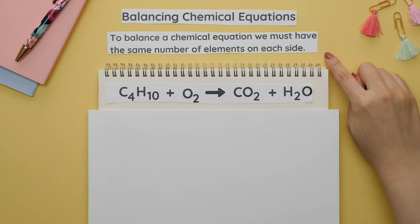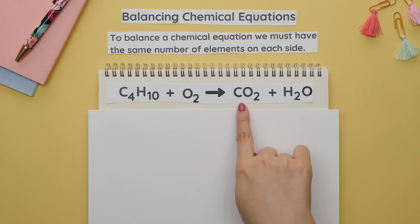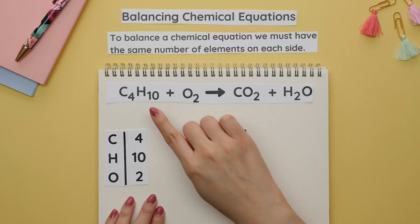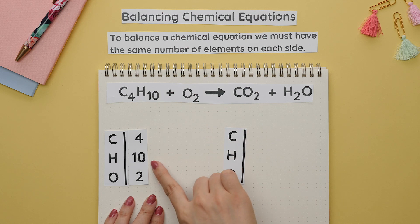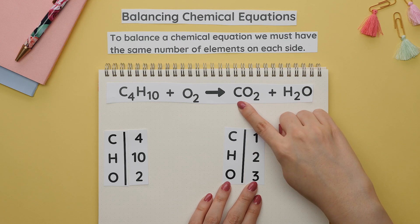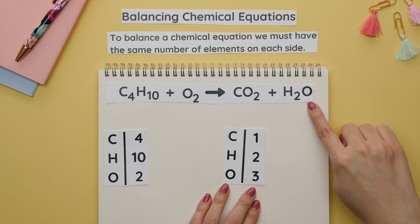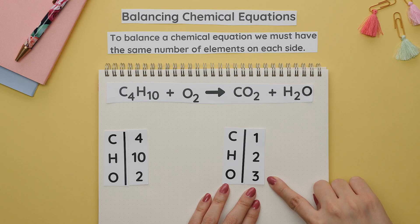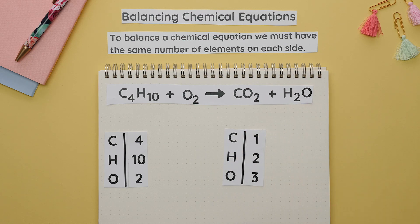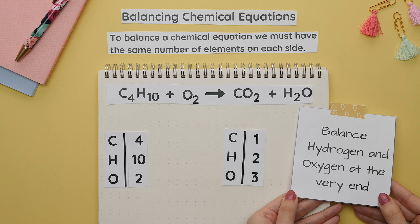To balance a chemical equation we must have the same number of elements on each side. Start by writing all the elements on each side, then figure out how many of each element you have. On the reactant side we have four carbons (four subscript), ten hydrogens, and two oxygens. On the product side we have one carbon, three total oxygens, and two hydrogens. It is recommended to leave hydrogen and oxygen to the very end, especially oxygen, because oxygen is typically found in multiple locations.